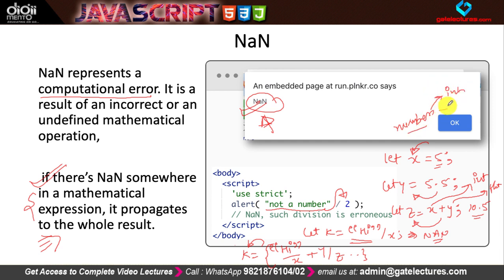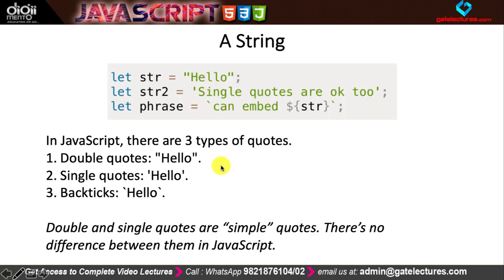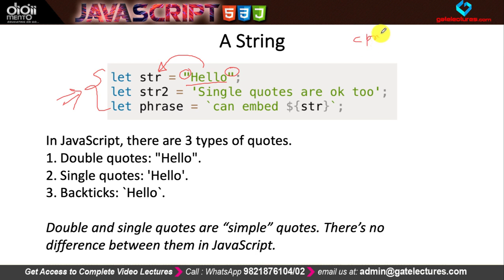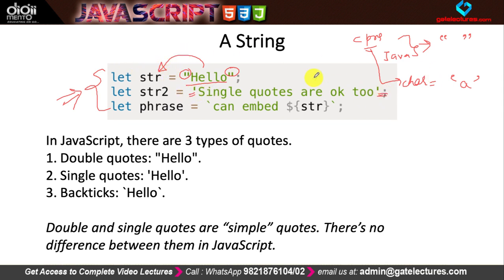The second data type is string. A string is something given in inverted commas. Remember that in C or Java, a string is generally given in double inverted commas, and a character is given in single inverted commas. But in JavaScript, you can give a string within single inverted commas, double inverted commas, or back ticks. So there are three types of quotations: double inverted commas, single inverted commas, and back ticks.